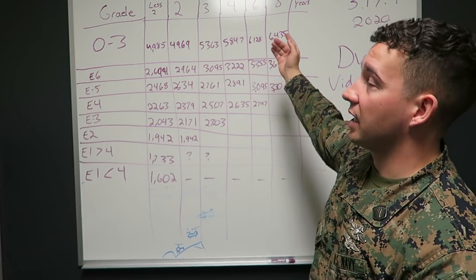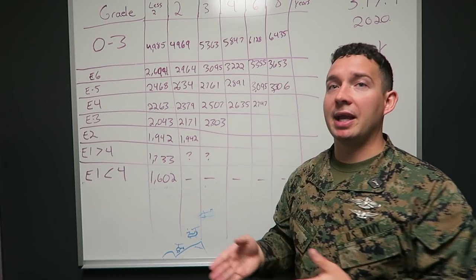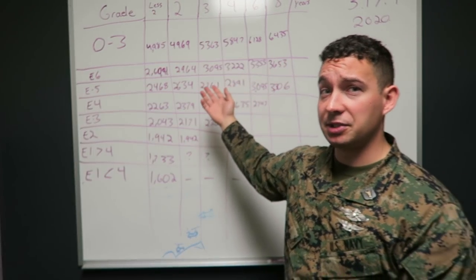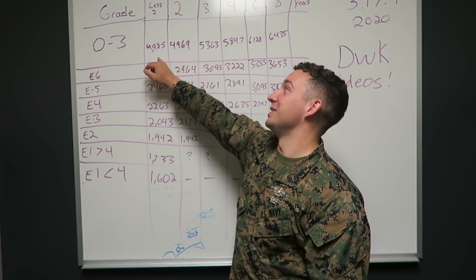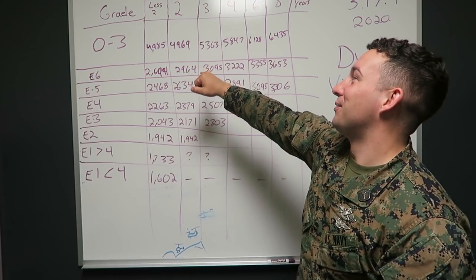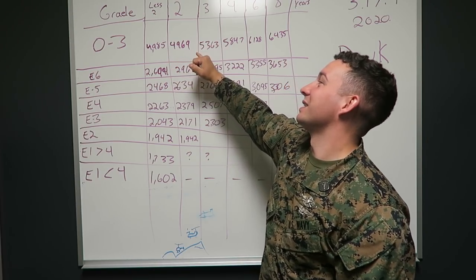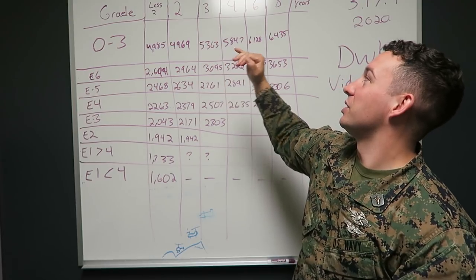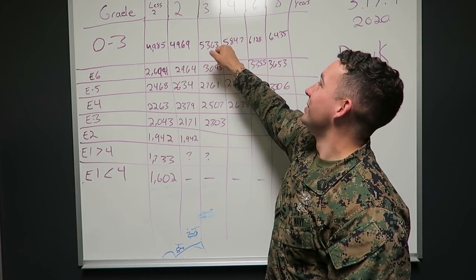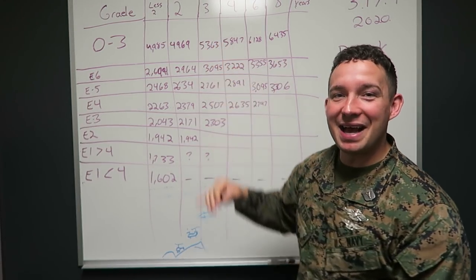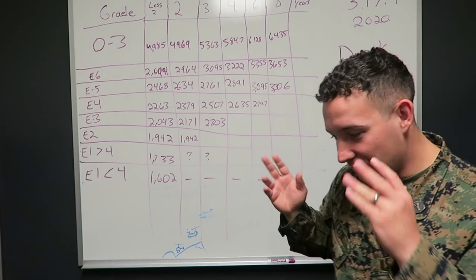O3, this is for doctors, but doctors, nurses, all you guys are going to get huge pay bonuses anyway, so this probably isn't going to affect you much. O3 less than two years, $4,985. O3 with two years, $4,969. O3 with three years, $5,363. O3 with four years. Why am I laughing at how much more they make?